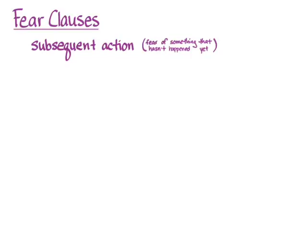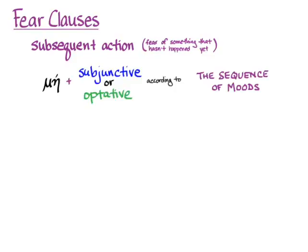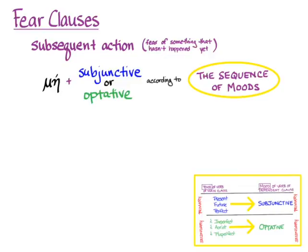The way we construct a fear clause is to use the conjunction μή, plus the subjunctive or the optative for the verb of the fear clause, according to the sequence of moods. If the tense of the main clause verb is present, future, or perfect, you're in primary sequence and use the subjunctive. If it's imperfect, aorist, or pluperfect, you use the optative. The secondary tenses are easy to remember because they all have a past indicative augment.